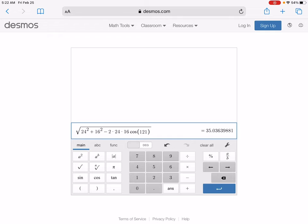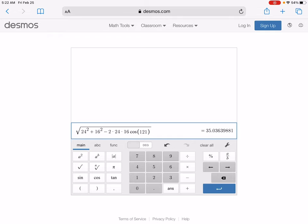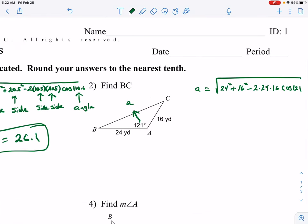So about 35.03. If we go to the nearest tenth, it's just 35. If we round it off to the nearest tenth.